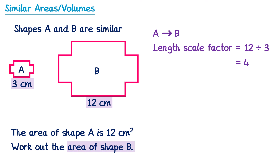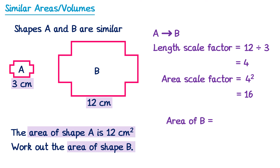We've been asked to work out the area of shape B, so we need the area scale factor, not the length scale factor. The area scale factor is the square of the length scale factor: 4 squared is 16. The area of shape B is therefore the area of shape A multiplied by the scale factor: 12 times 16 is 192. So the area of shape B is 192 centimetres squared.